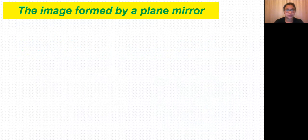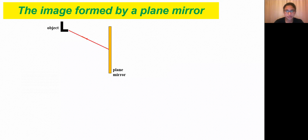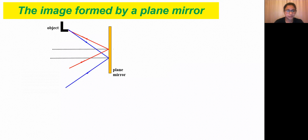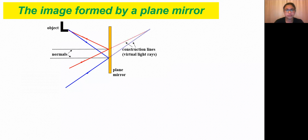Now let's see how the image is formed by a plane mirror. Consider a plane mirror with an object placed in front of it. A ray of light incident on the plane mirror is reflected back, represented by a red ray. Another ray of light, represented by a blue ray, also hits the mirror surface and gets reflected back. When we extend these reflected rays behind the mirror, they meet at a point — and that is where we get the image.